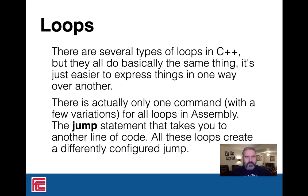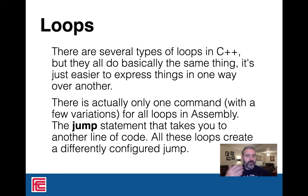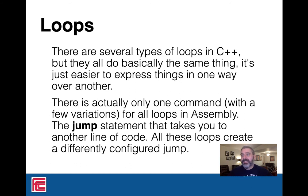So let's get into the meat of this week: loops. There are lots of different types of loops in C++. They all basically do the same thing, and you can write them in various ways to get them to do the exact same thing regardless of which one you're using. It's just that sometimes it's easier to express something in a particular way. At the end of the day, if you look at the assembly language created by your C++ code, there's really only one thing — a jump. Going from one line of code to another.